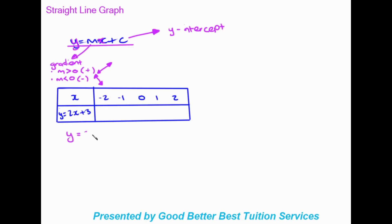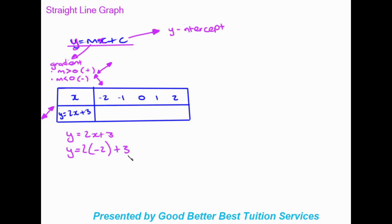We have y equals 2x plus 3. An important thing to note first: the gradient here is greater than zero, which means it's a positive gradient, so we know the graph would head in the top-right direction. Also looking at the c value, which is 3, we know the y-intercept is at 3 on the y-axis of the graph, and we'll see that confirmed when we start plotting.